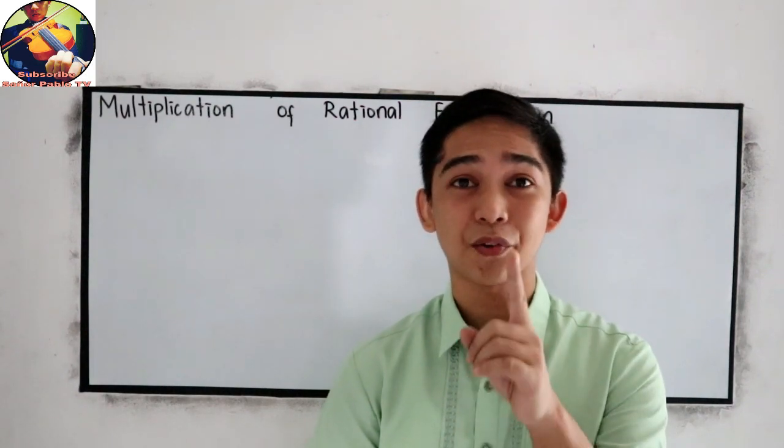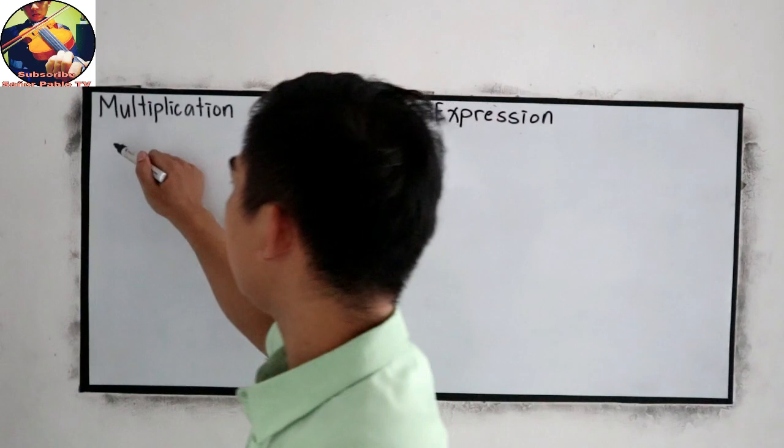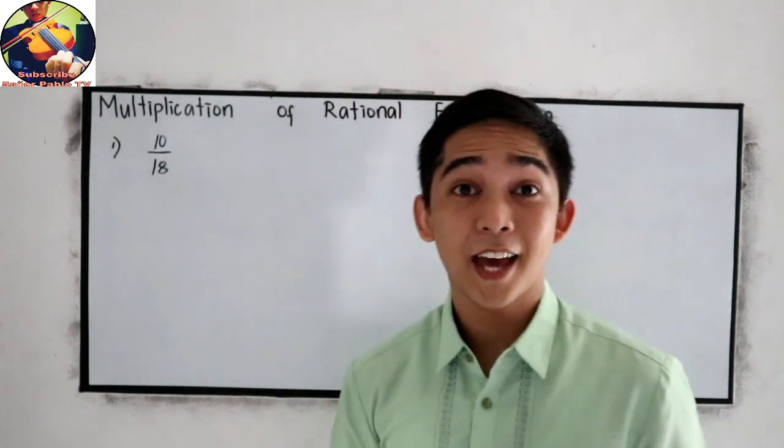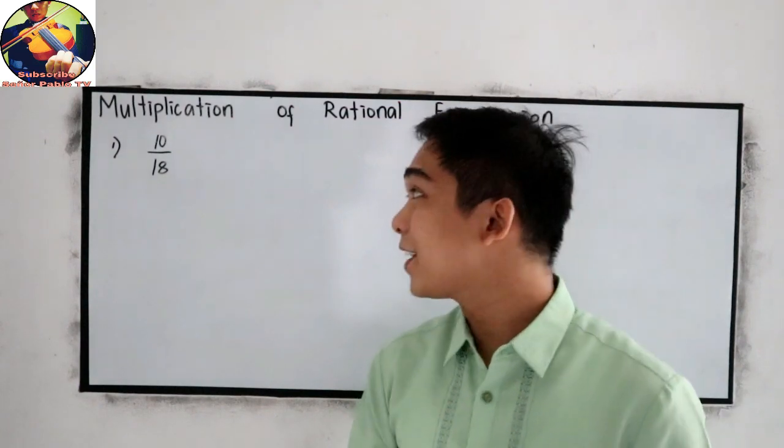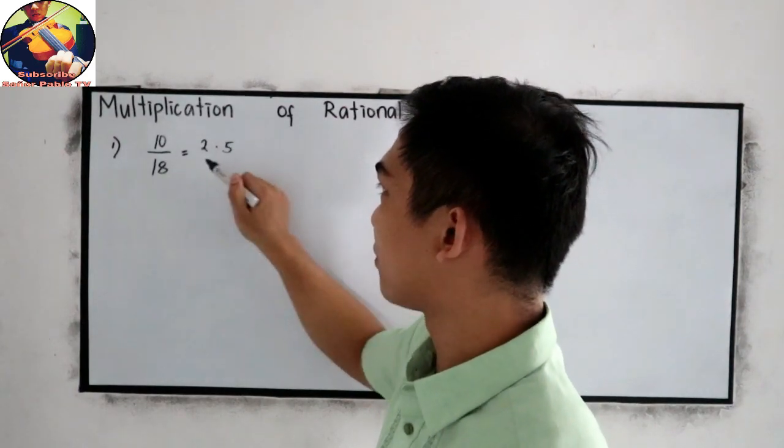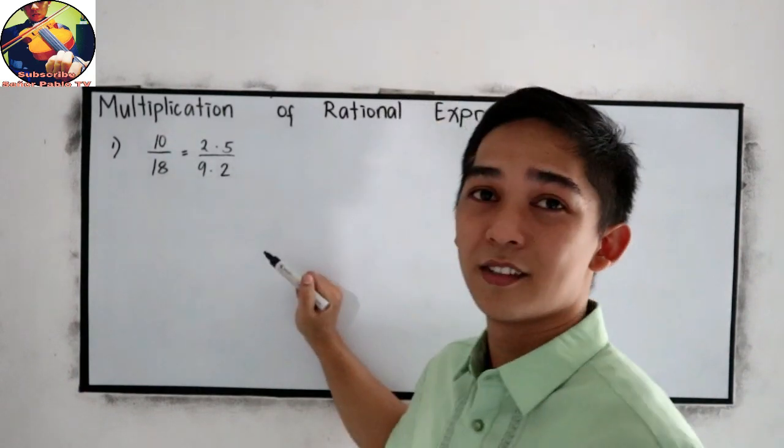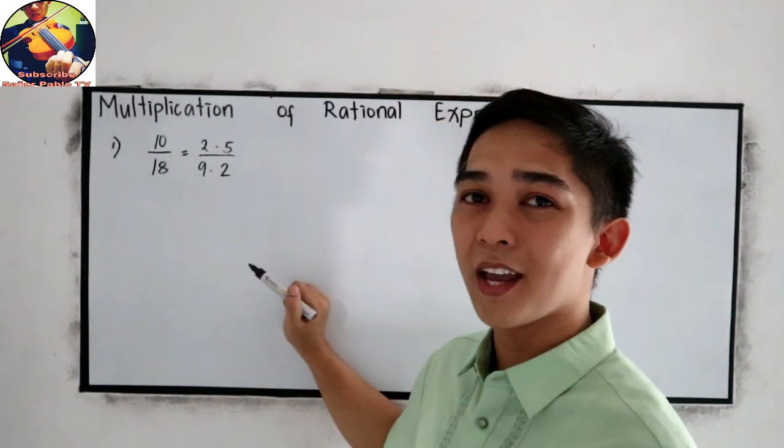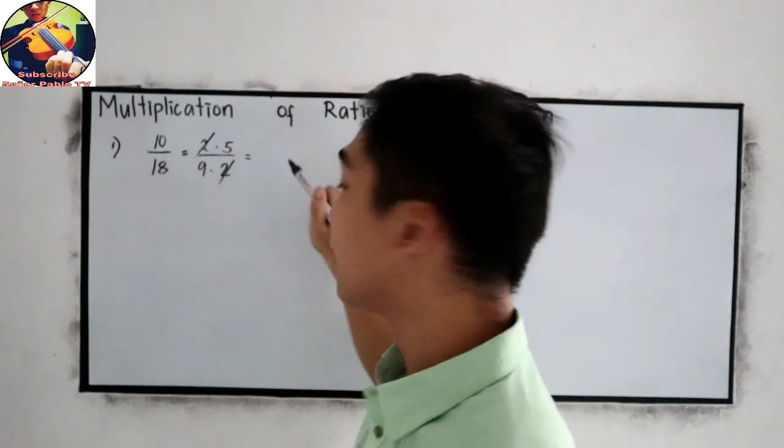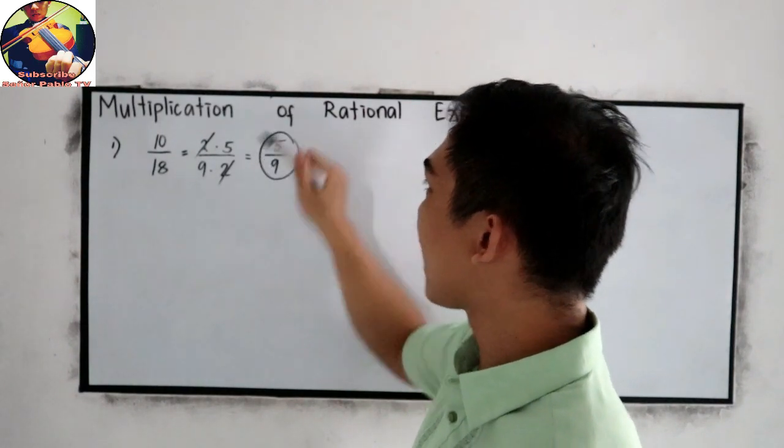But first, let us have a short recall about simplifying expressions. Let's say we have 10 over 18. To simplify that, we know that the factors of 10 are 2 and 5, and for 18, factors are 9 times 2. Now to simplify, cancel the common factors. The common factor here is 2 and 2, and our final answer is 5 over 9. This is now the simplest form.